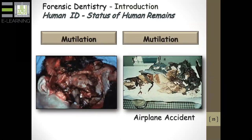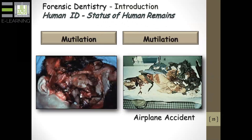Mutilation — this is an airplane accident on the right. A gentleman and his two sons were flying in a business plane their company owned and crashed, and this is what people look like when they fall out of the sky. In a case like this, the forensic dentist would be called in, and before the remains are taken out of the body bag, a portable x-ray unit is brought in and the body bag is serially radiographed so we can identify where bits and pieces of the maxilla and mandible may be to facilitate identification.